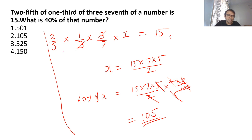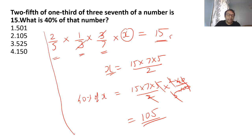Let me repeat this: two-fifth of one-third of three-seventh of number x equals 15. Solve to get x, then find 40% of x. 40% is 2/5 — the 2s and 5s cancel and you get the answer as 105.